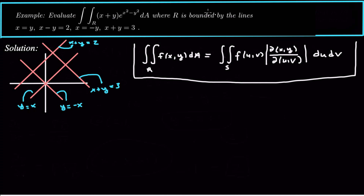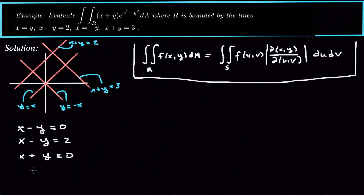What we actually want to do is make a change of variables in the right way to simplify this integrand. When we change variables, we base it off the region of integration — for example, if there's a circle, we switch to polar coordinates. Here we notice that the boundary equations can be written as x minus y equals 0, x minus y equals 2, x plus y equals 0, and x plus y equals 3. So an appropriate substitution would be u equals x plus y and v equals x minus y.